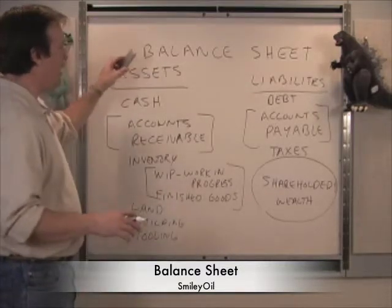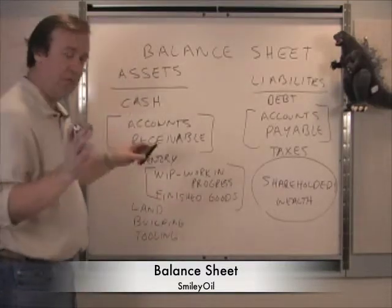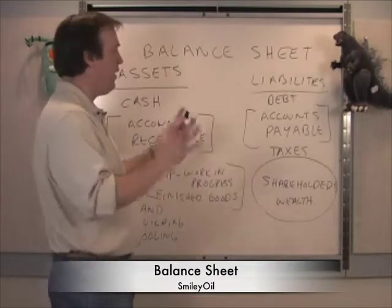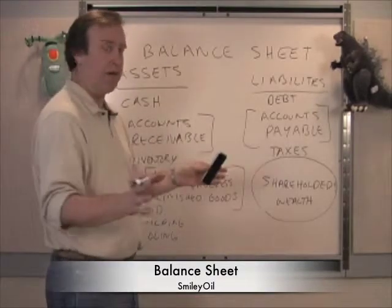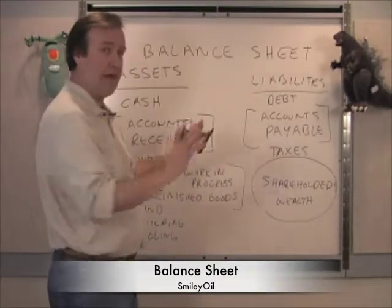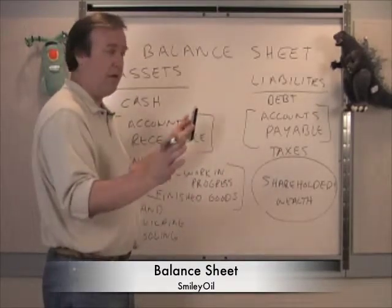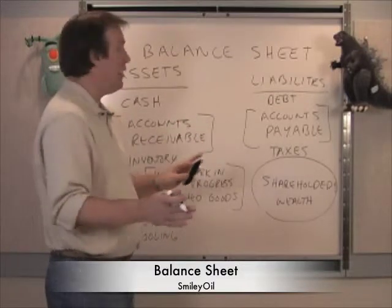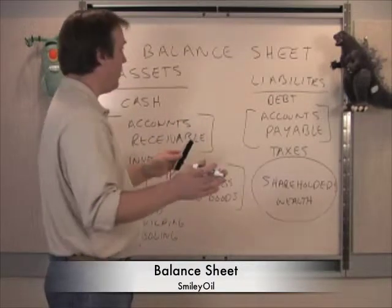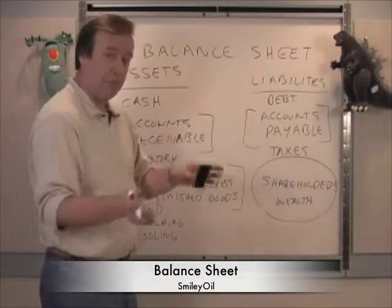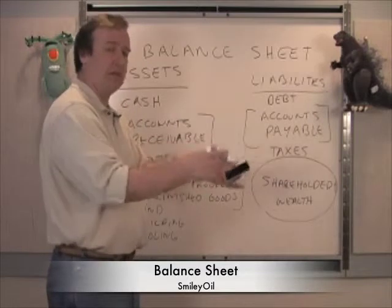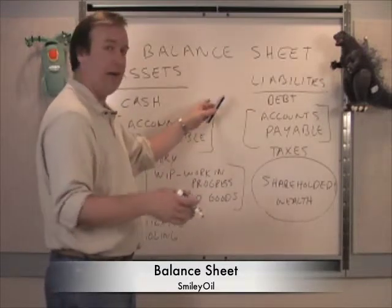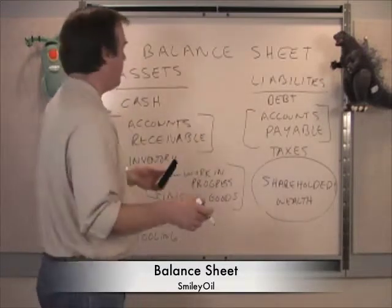The balance sheet is reported with the income statement on a quarterly basis by all public companies. Private companies don't have to say anything — that's a big difference between the two. With a public company, you can buy and sell shares fluidly, and you can't do that with a private company.